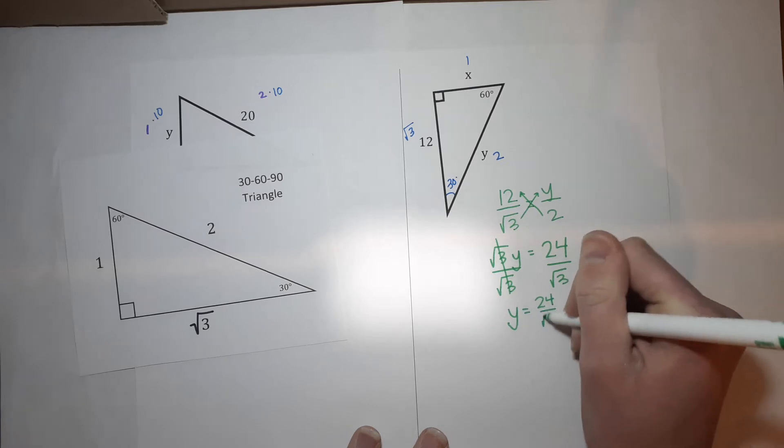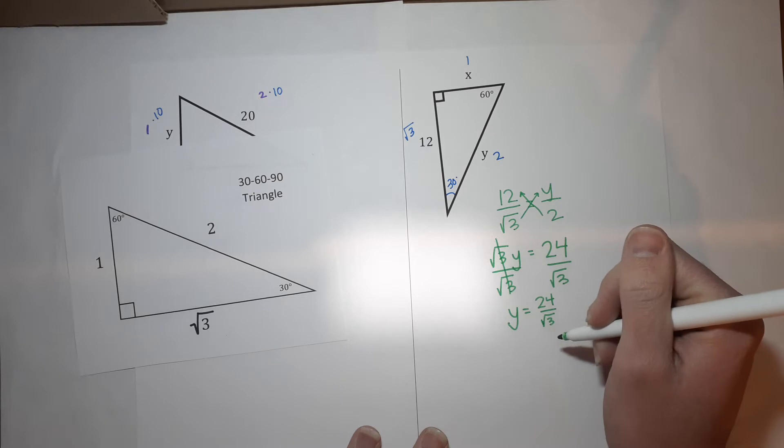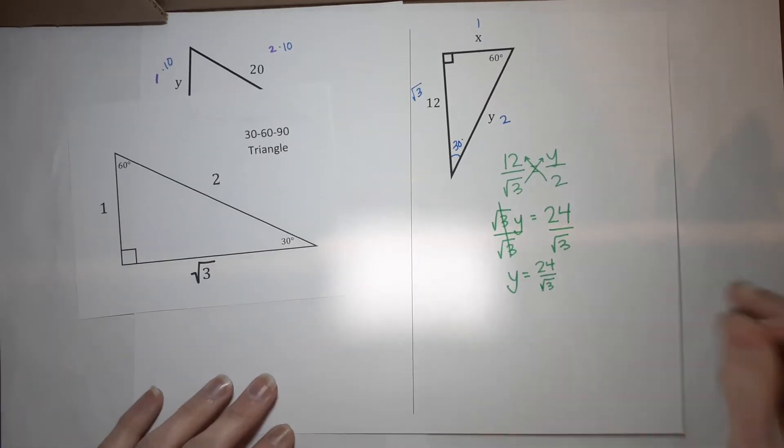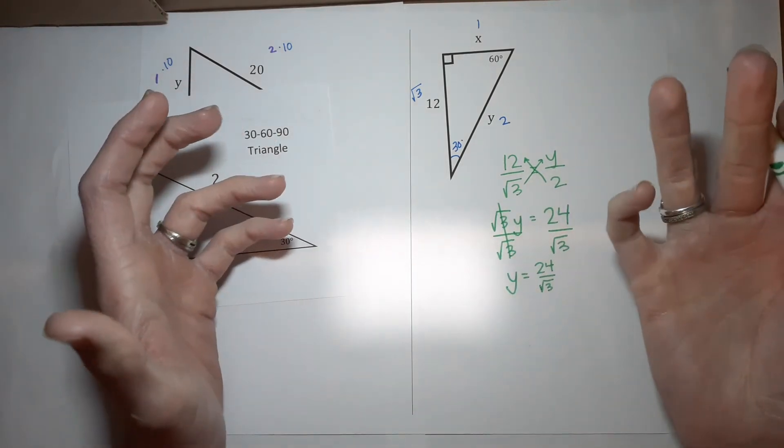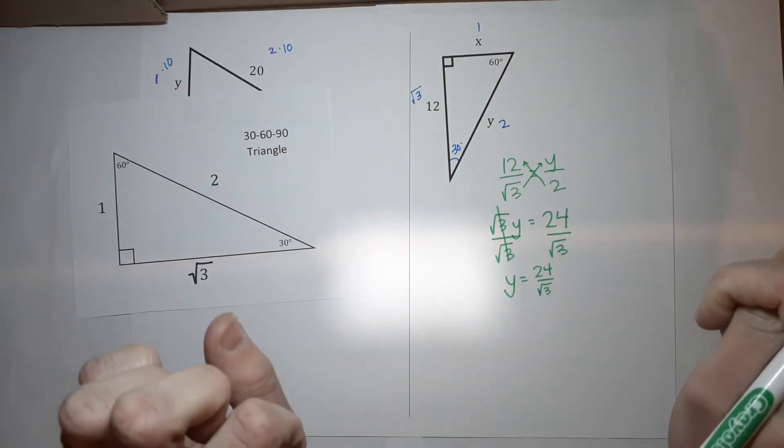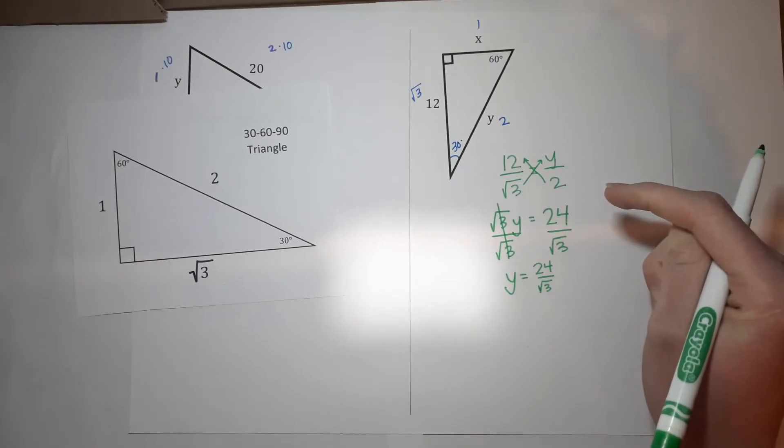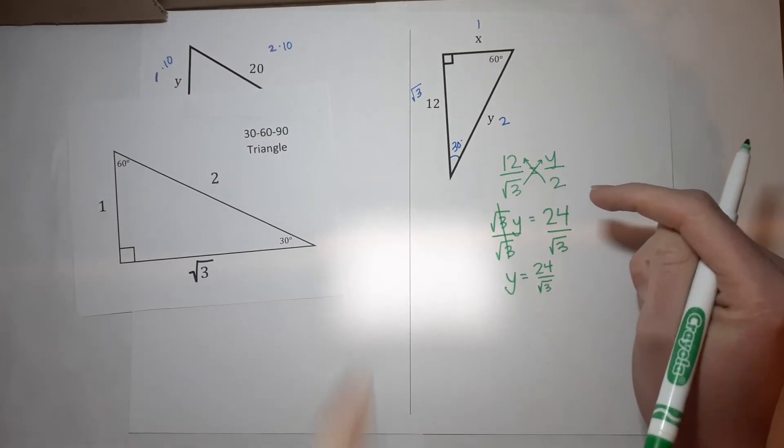You might be like, I'm done, but hold on. Oh my gosh. We can't have a radical in our denominator because denominators are very sensitive. And a lot of times they're irrational numbers and we just don't like to have them in our denominator.